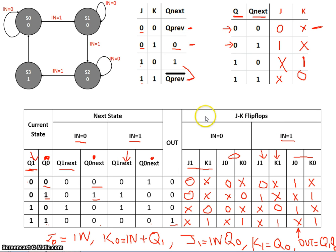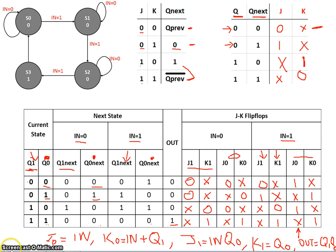So far, in the previous video, we looked at how to fill out this next state table for this particular sequential system. We came up with Boolean expressions for the inputs j0, k0, j1, k1, and the final output q1, q0. In this video, we're going to look at creating the circuit and trying to figure out the timing parameters.